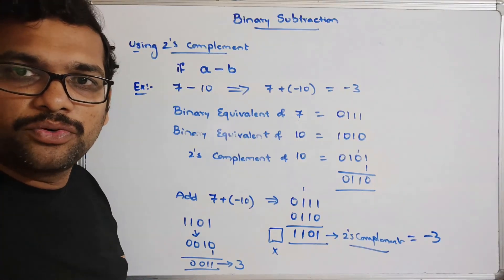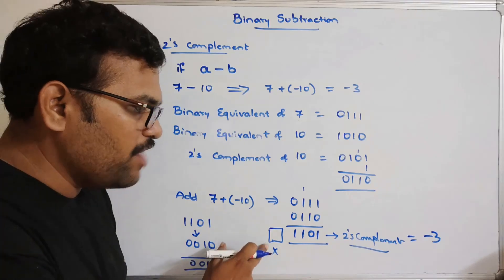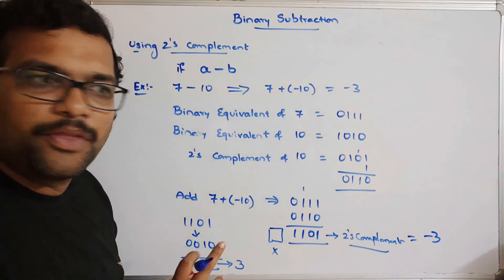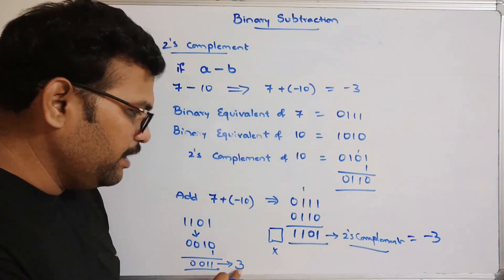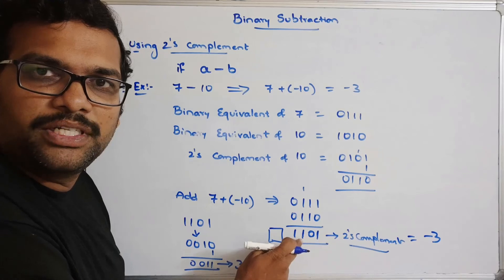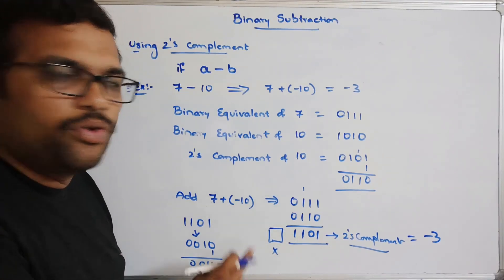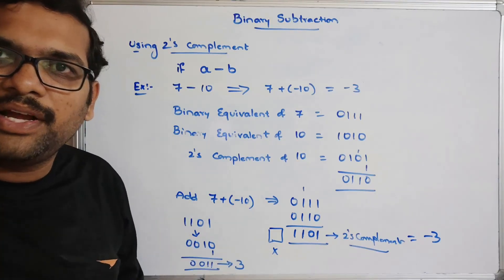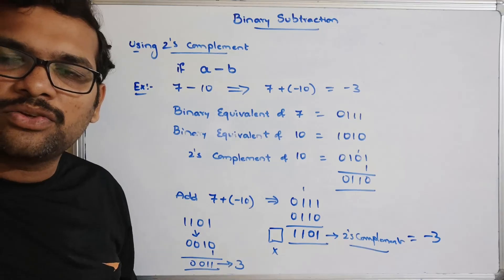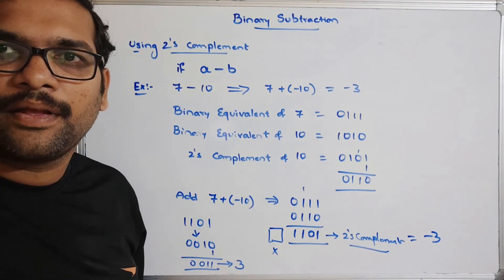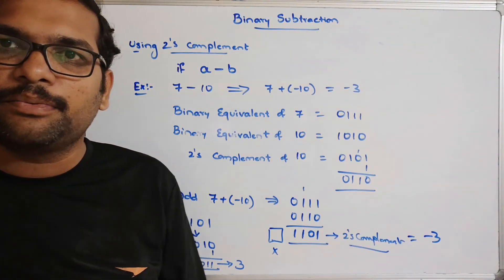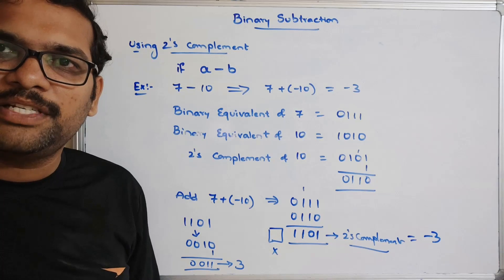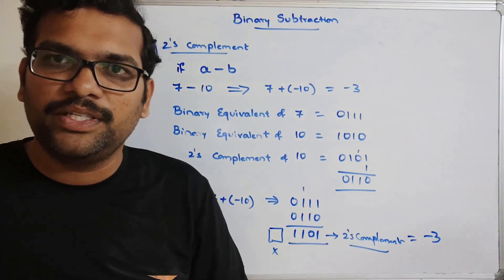Hope you understood. Just to recap: if you are not having any carry, the result is in the form of 2's complement, and we find the 2's complement to get minus 3. In this session we discussed finding binary subtraction using 1's complement as well as 2's complement. If you have any doubts, feel free to post in the comment section. If you enjoyed the session, like, share with your friends, and don't forget to subscribe to our channel. Thanks for watching.